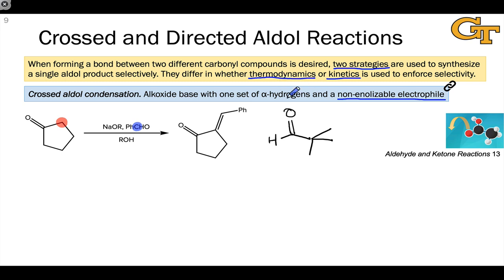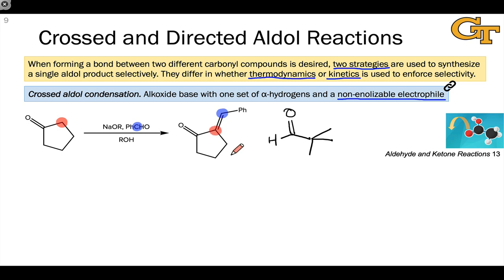So provided we can avoid self-reaction of the ketone with itself — which is easy to do by designing our reaction conditions the right way, using for example relatively small concentrations of the nucleophilic partner — we can selectively get a reaction in which the non-enolizable compound acts as electrophile and the enolizable compound acts as nucleophile to give a single product. And here, because we used alkoxide base, the aldol condensation product forms the alpha-beta unsaturated ketone.